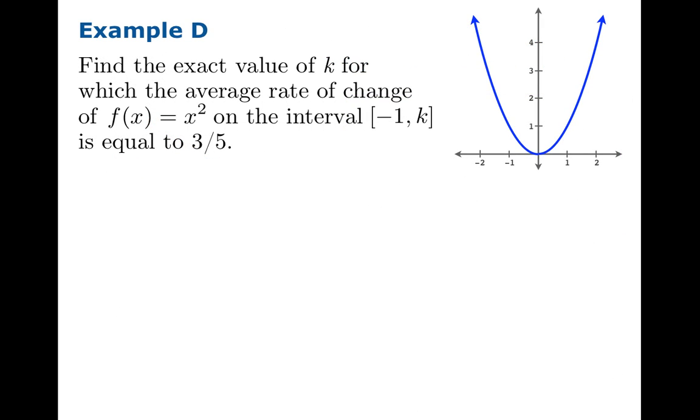We're going to end with this somewhat sophisticated problem. Find the exact value of k for which the average rate of change of the function x squared on the interval from negative 1 to k is equal to 3 fifths. The first thing we'll notice is interval notation implicitly assumes that you've got the left-hand endpoint and the right-hand endpoint listed in that order. So k has to be to the right of negative 1. The problem's really demanded that k be greater than negative 1. That's no loss anyway for this function because any choice of k to the left of negative 1 is going to create an interval on which the average rate of change is obviously negative. We are looking for something on the right of negative 1.